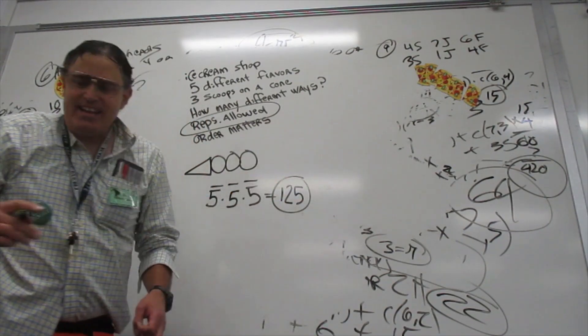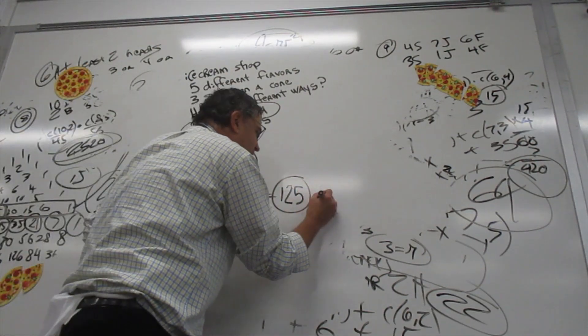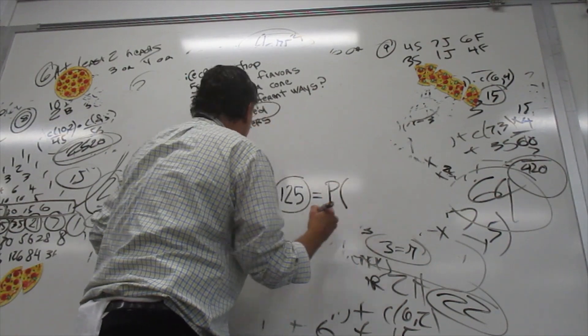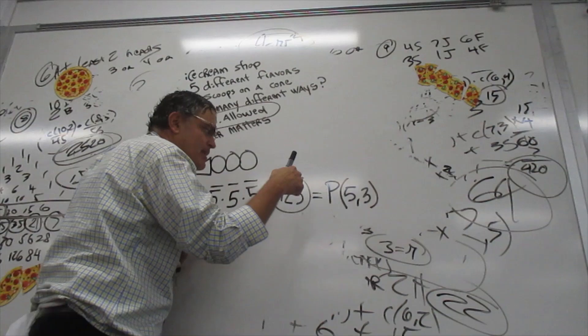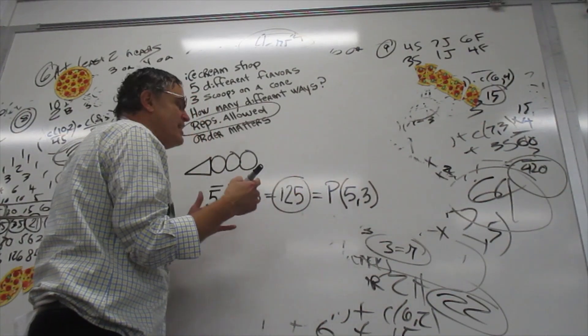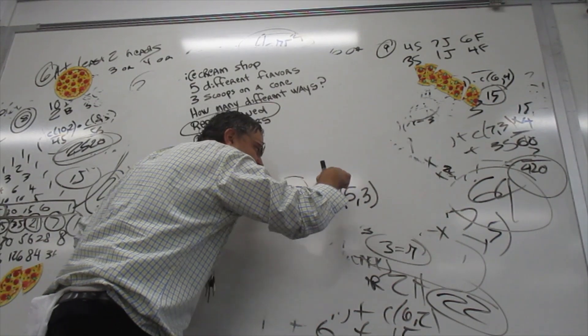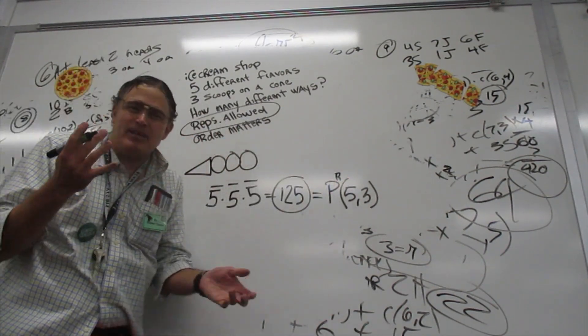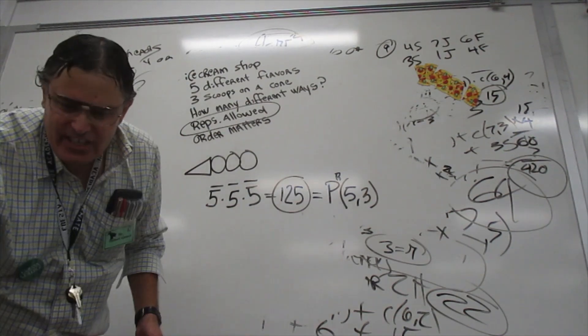And that happens to be the answer for this problem. And a way of writing this is five pick three. But that means permutations without repetitions. This is where repetitions are allowed. You put a little r. It looks like an exponent, but it's really a superscript. And so you can change this problem.